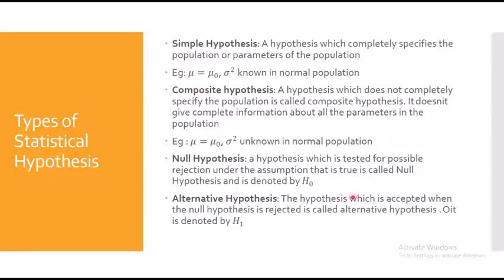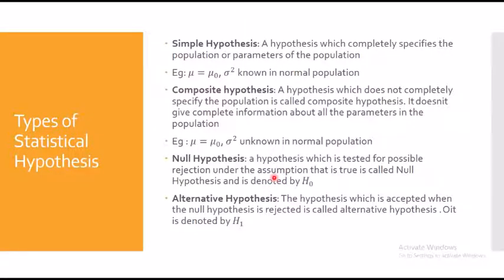The hypothesis which is accepted when the null hypothesis is rejected is called the alternative hypothesis, and it is denoted by H₁. Keep these two notations in mind. Connect the definitions to the examples and you will develop a clear understanding.